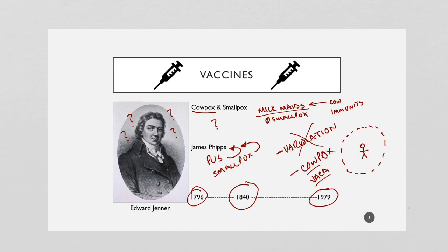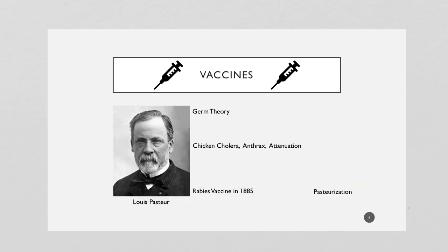There are only smallpox stockpiles at the CDC in Atlanta and in Russia, supposed to be used for research purposes only — kept around just in case a similar virus comes along — and it is under very, very tight security.